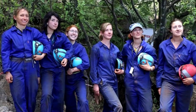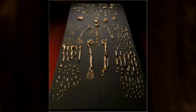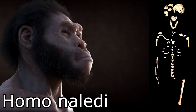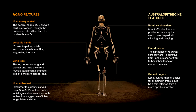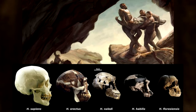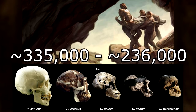Berger assembled a team of experts to return to the cave in 2013 and 2014, where they found more than 1,500 fossils from at least 15 individuals, which Berger and his colleagues described as a new species: Homo naledi. The Homo naledi fossils had hands and feet that looked like modern humans, but their skulls and teeth were closer to those of early Homo species like Homo erectus, and the brain was especially small — more like that of Australopithecus. Radiometric dating suggested these semi-human Homo naledi fossils were between 335,000 and 236,000 years old, suggesting they were around at the same time as our species was coming into existence.